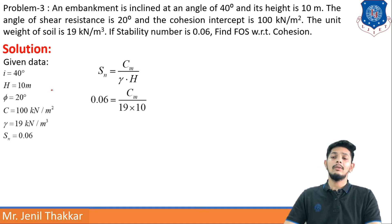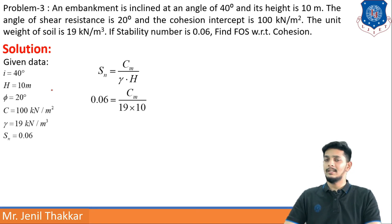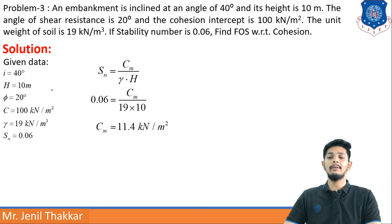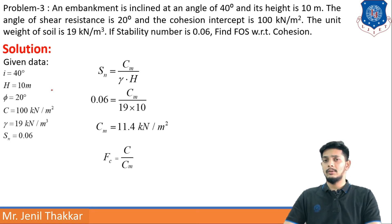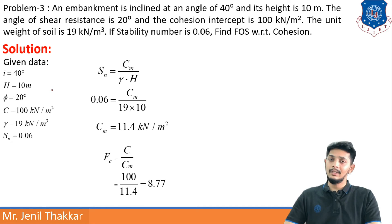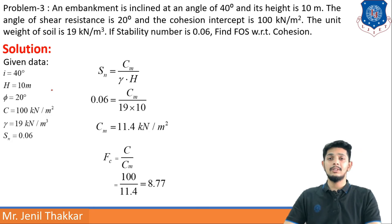Using the stability number formula: SN = CM / (γ × H). CM is unknown, so substituting SN = 0.06, H = 10, γ = 19: CM = 0.06 × 19 × 10 = 11.4 kN/m². Remember that CM and c (cohesion) are always in kN/m² and unit weight is always in kN/m³. Then FC = c / CM = 100 / 11.4 = 8.77. FC is unitless.